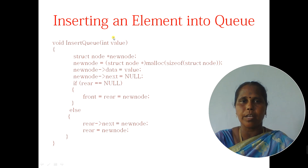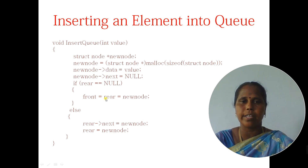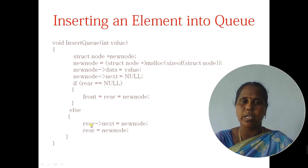Then the value that I want to insert has to be assigned to the node. Afterwards, the next part is set to null since it is the last element in the queue. I am checking if rear is equal to null, then this is the one and only node in the list. So both front and rear are set to this newly created node. If rear is not equal to null, that is the else part, the list has some other elements. So the last element previously in the queue's next link has to be set to this new node and make this new node as the rear node.